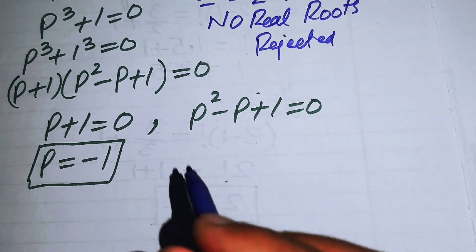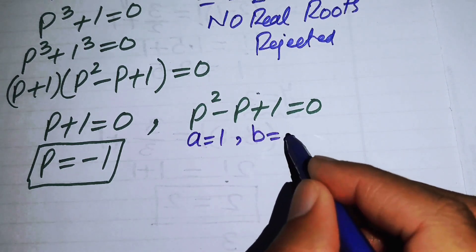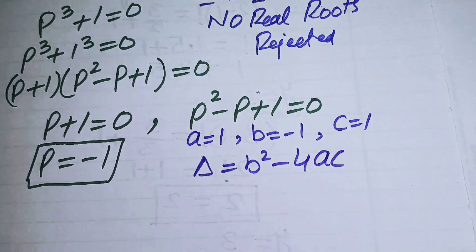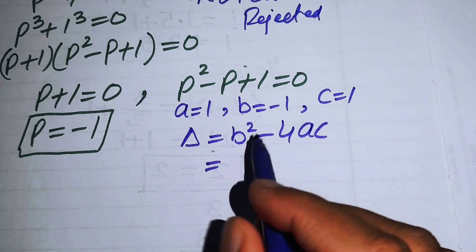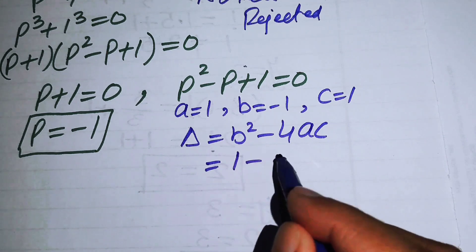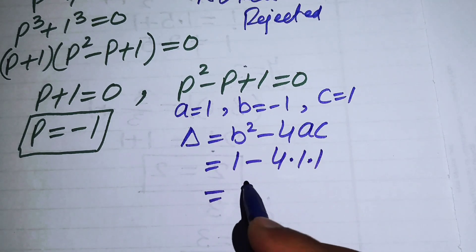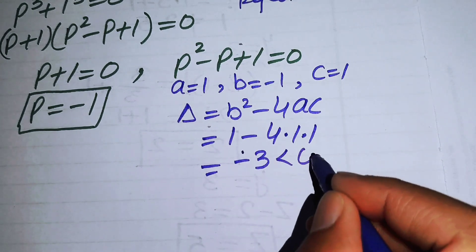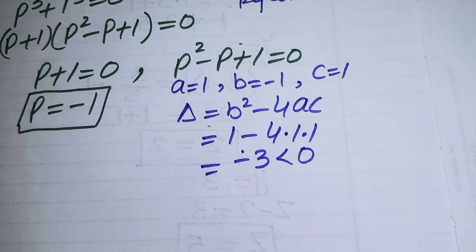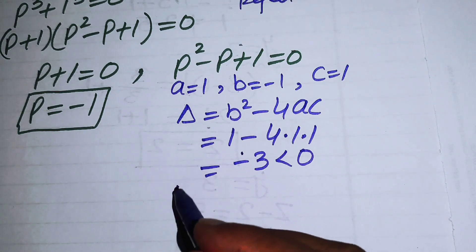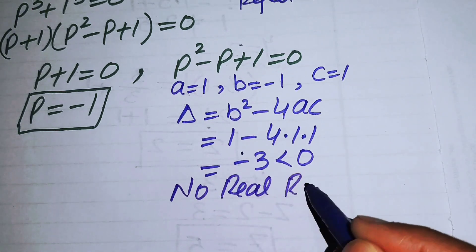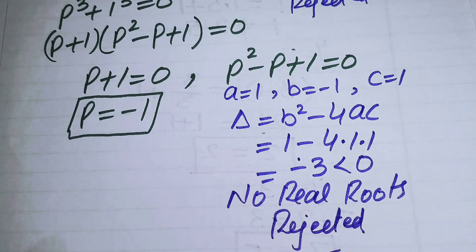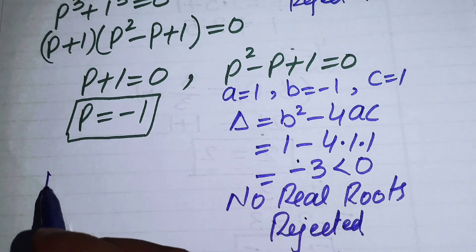We check the quadratic factor p² − p + 1 = 0 for real roots using the discriminant, with a = 1, b = −1, c = 1. We get Δ = (−1)² − 4(1)(1) = 1 − 4 = −3, which is less than 0. So this quadratic has no real roots and we reject this case.